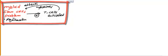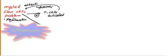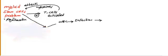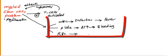The main problem in aplastic anemia is myeloid stem cells. As a result of this problem, you will have issues with the following: if you have a problem with white blood cells, that means you will have infection, so the clinical feature will be manifested as fever. If you have a problem with platelets, that means you will have increased PT and clinical features will lead to bleeding. And if you have a problem with red blood cells itself, it will manifest as normocytic anemia.